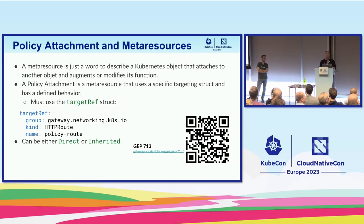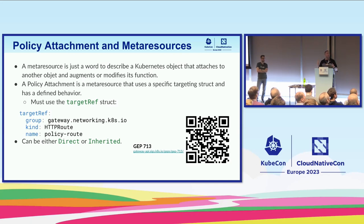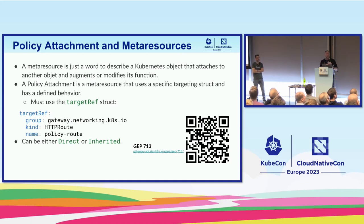Policy attachment is a new thing we're building in Gateway API that allows you to use what we call meta resources to affect the way that some Kubernetes objects will work. A meta resource is a Kubernetes object that attaches to another Kubernetes object, and the controllers responsible for reconciling them are required to modify the function of the attached object. A policy attachment is a meta resource that uses a specific struct — the target ref one — and has a defined behavior. They can be either direct or inherited.